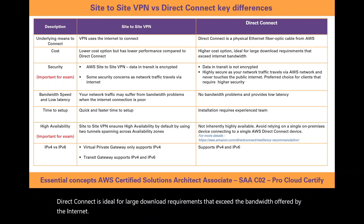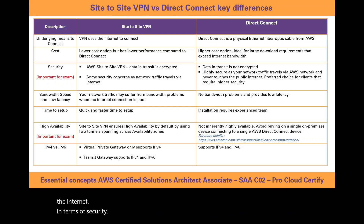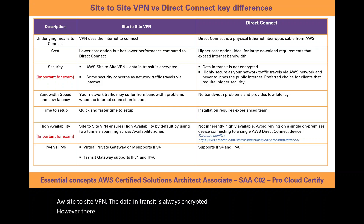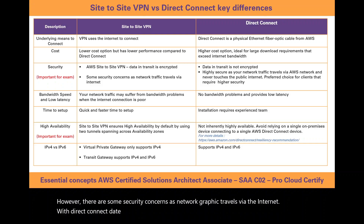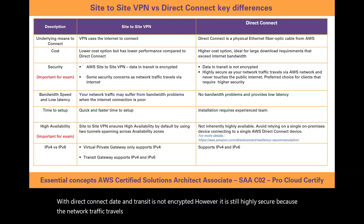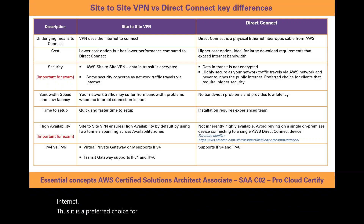In terms of security, with AWS site-to-site VPN the data in transit is always encrypted, however there are some security concerns as network traffic travels over the internet. With Direct Connect, data in transit is not encrypted, but it is still highly secure because the network traffic travels over the AWS network and never touches the public internet. Thus it is a preferred choice for clients that require higher security as part of regulatory requirements.